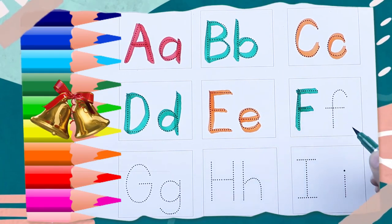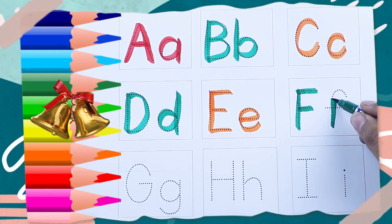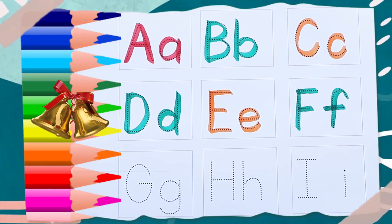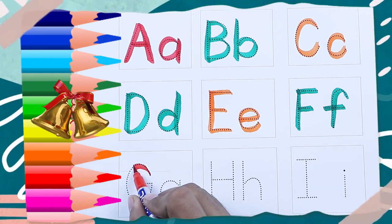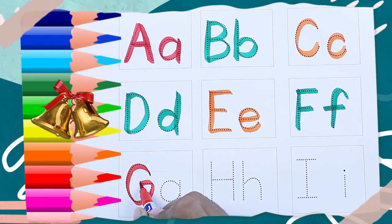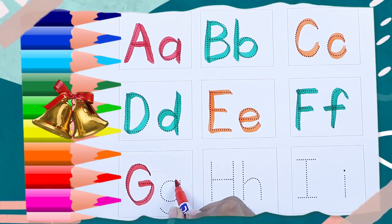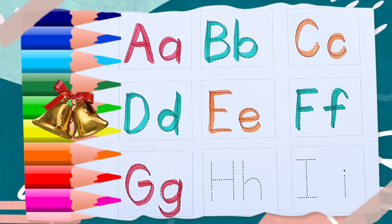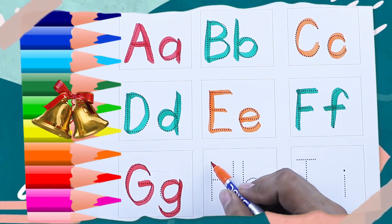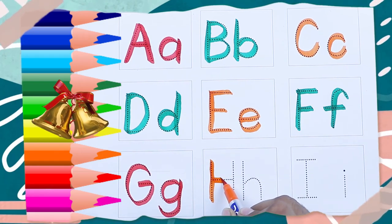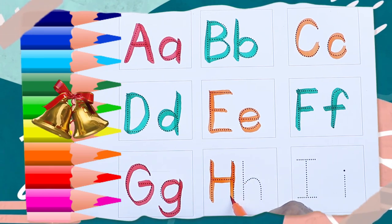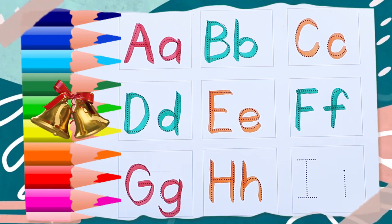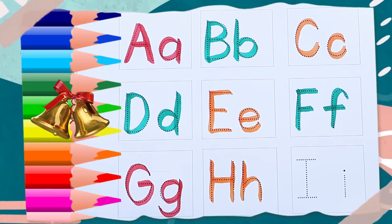Capital F — F for Fish. Green color small f — f for Fish. Red color capital G — G for Goat. Red color small g — g for Goat.